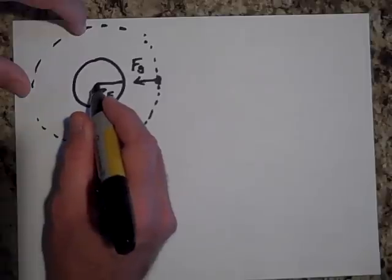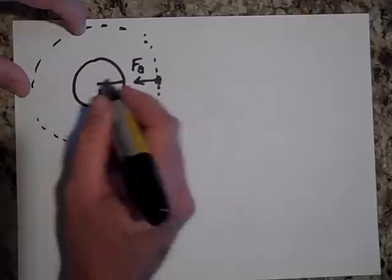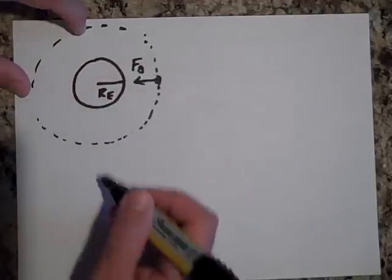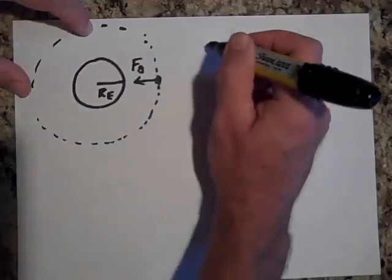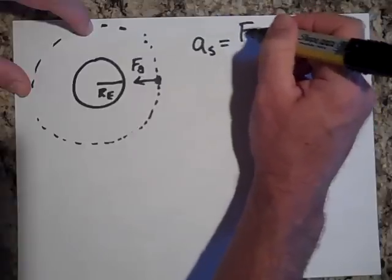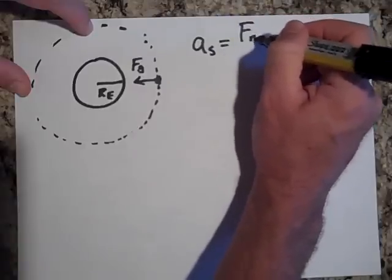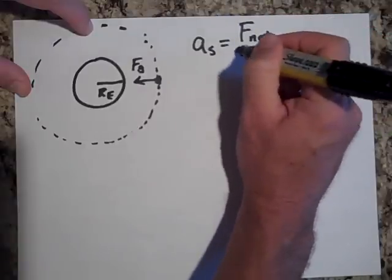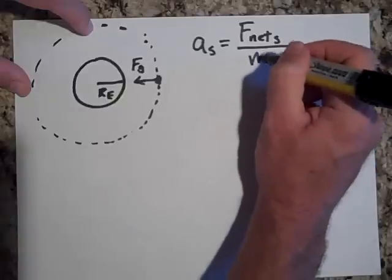There's a force on the Earth of the satellite pulling on the Earth, but we're just looking at the force on the satellite. So a of the satellite is equal to the net force on the satellite all over the mass of the satellite.